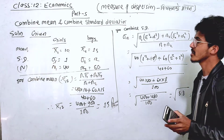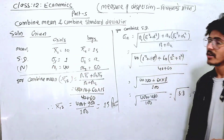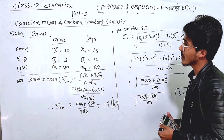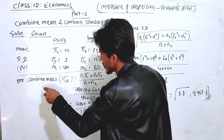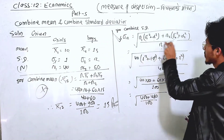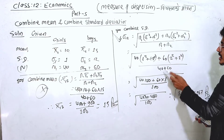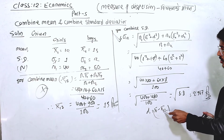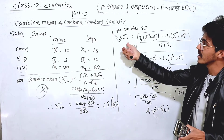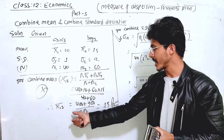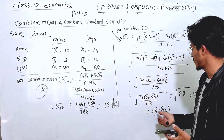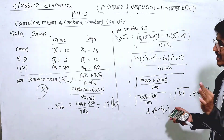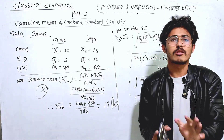The first part of the problem is the combined mean, and the next part is the combined standard deviation. For the combined standard deviation formula, we need D₁ and D₂, where D₁ = x̄₁ minus x̄₁₂. So we first calculate the combined mean, then use it to find the combined standard deviation.